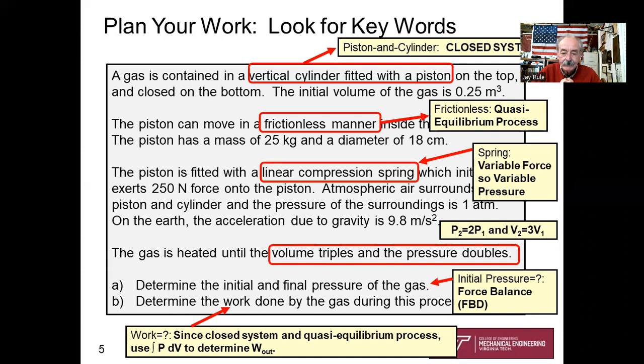Now the next key trick, it says fitted with a linear compression spring. This is a mechanical engineering class, and so a spring. From your previous coursework, you should know that the spring force, as you compress it, gives you a variable force. Therefore, we're going to see from our sketching that it's going to be a variable pressure inside the piston and cylinder.